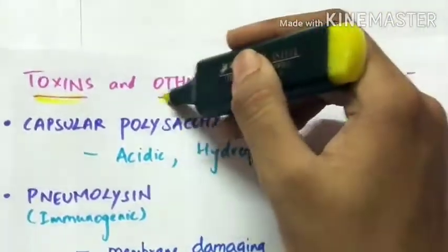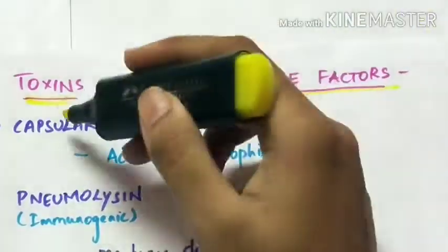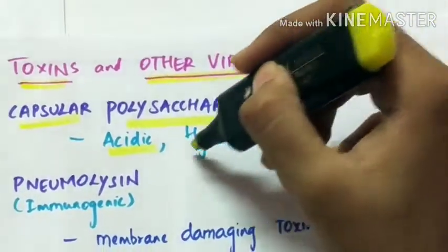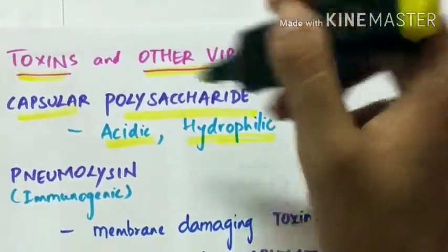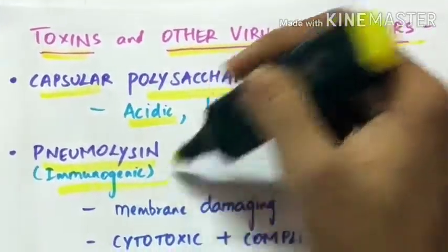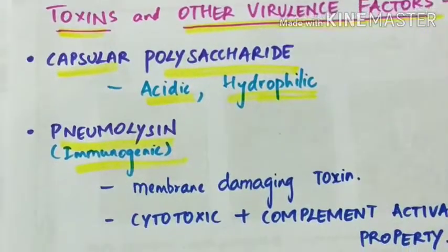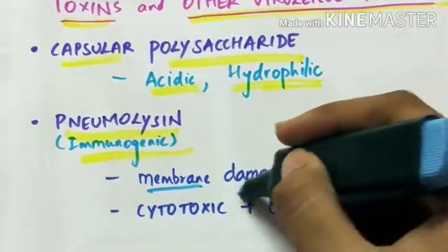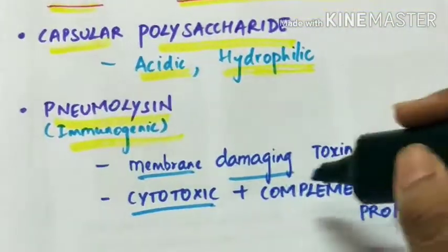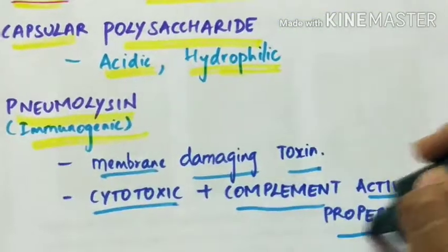Toxins and other virulence factors. Capsular polysaccharide which is acidic and hydrophilic, that is water loving. Pneumolysin. This is immunogenic. Pneumolysin is membrane damaging toxin. This is cytotoxic and it also has complement activating property.